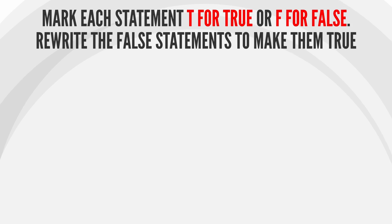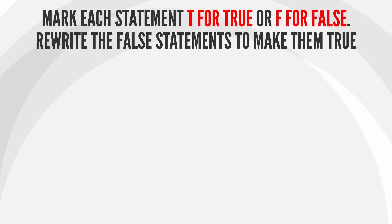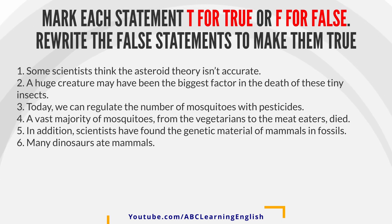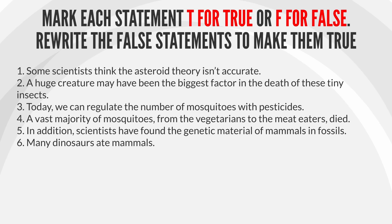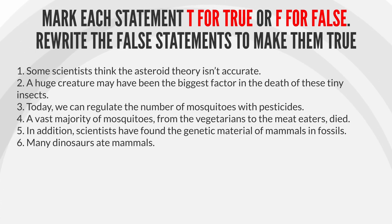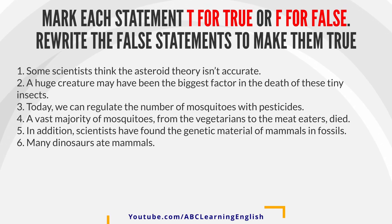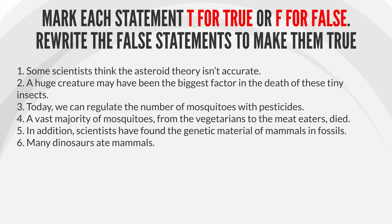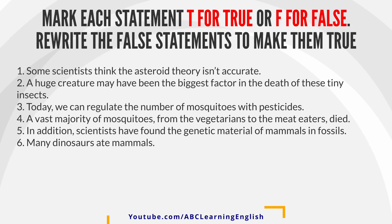Bonus. Mark each statement T for true or F for false. Rewrite the false statements to make them true. 1. Some scientists think the asteroid theory isn't accurate. 2. A huge creature may have been the biggest factor in the death of these tiny insects. 3. Today, we can regulate the number of mosquitoes with pesticides. 4. A vast majority of mosquitoes, from the vegetarians to the meat-eaters, died. 5. In addition, scientists have found the genetic material of mammals in fossils. 6. Many dinosaurs ate mammals.